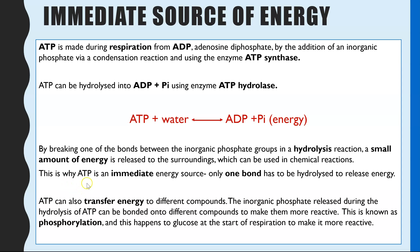This is the step where a small amount of energy is released when the bond between the phosphate group is broken or hydrolysed. It's described as an immediate source of energy because only one bond has to be hydrolysed, so you get this energy very rapidly. This diagram represents a reversible reaction: for ATP hydrolysis you add water and need ATP hydrolase; the reverse is a condensation reaction requiring ATP synthase and a small amount of energy.